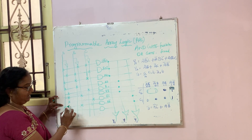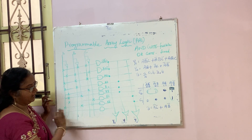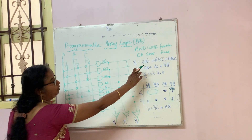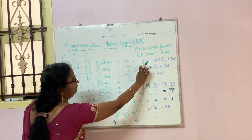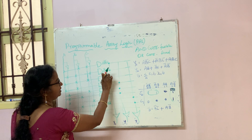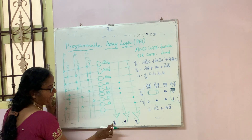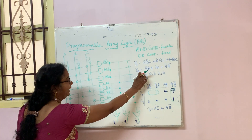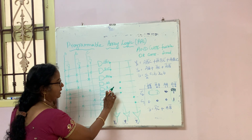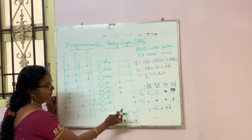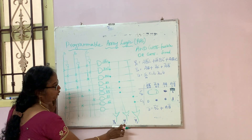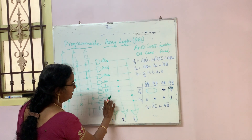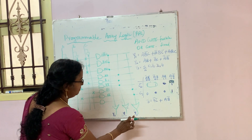So here we have, for the third output Y3, A bar and C bar connected, and for the other term, A and B bar. We have connected all these things. For Y1, the three product terms should be added with an OR gate. For Y2, we have to add A, B plus A bar, C plus A bar, B bar. For Y3, we have to add A bar, C bar plus A, B bar.